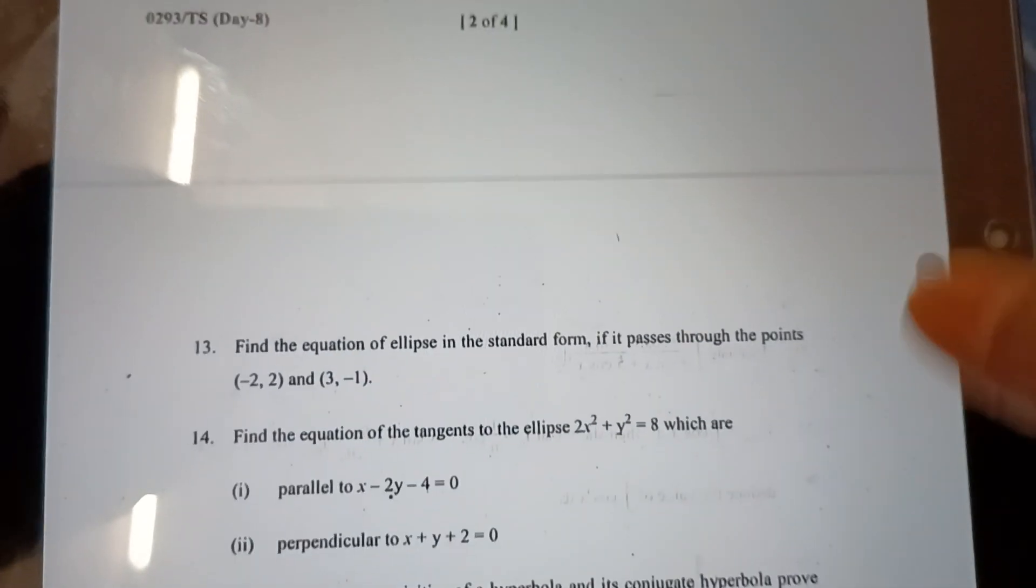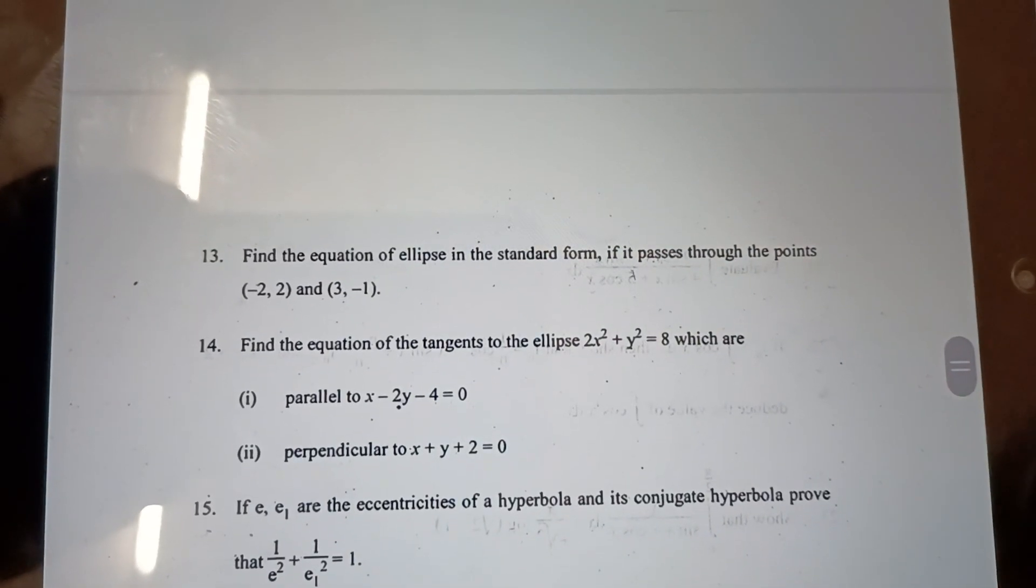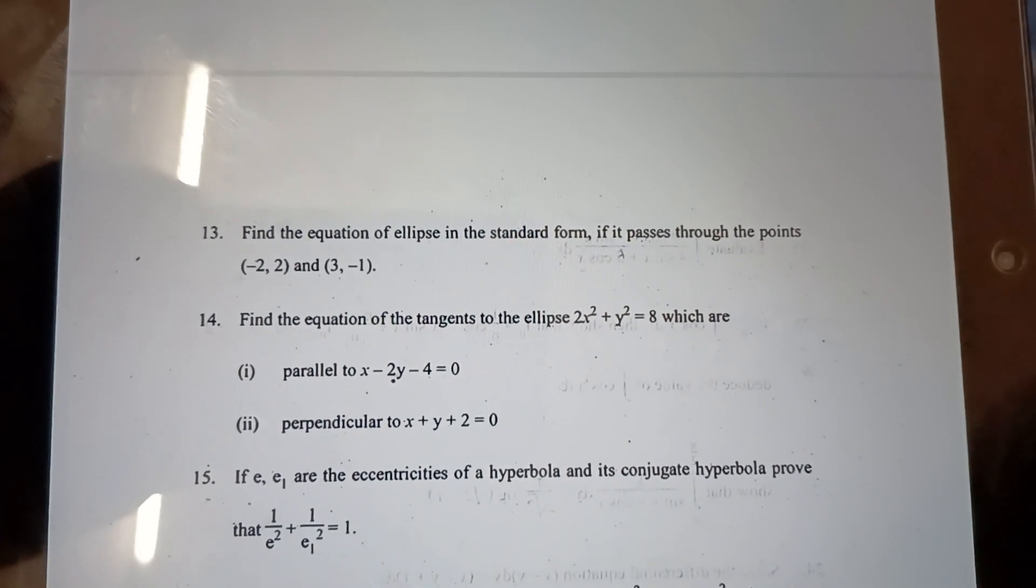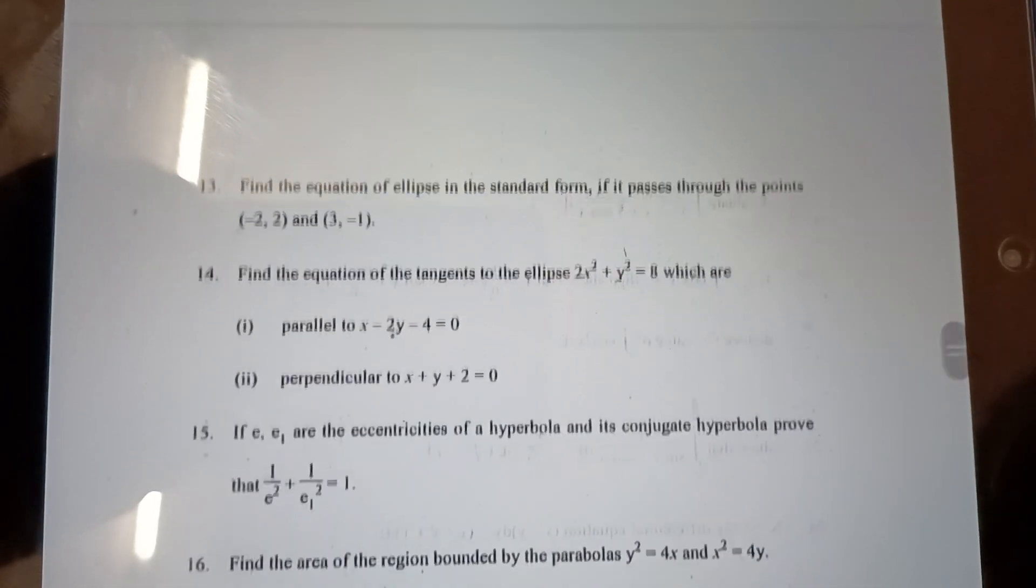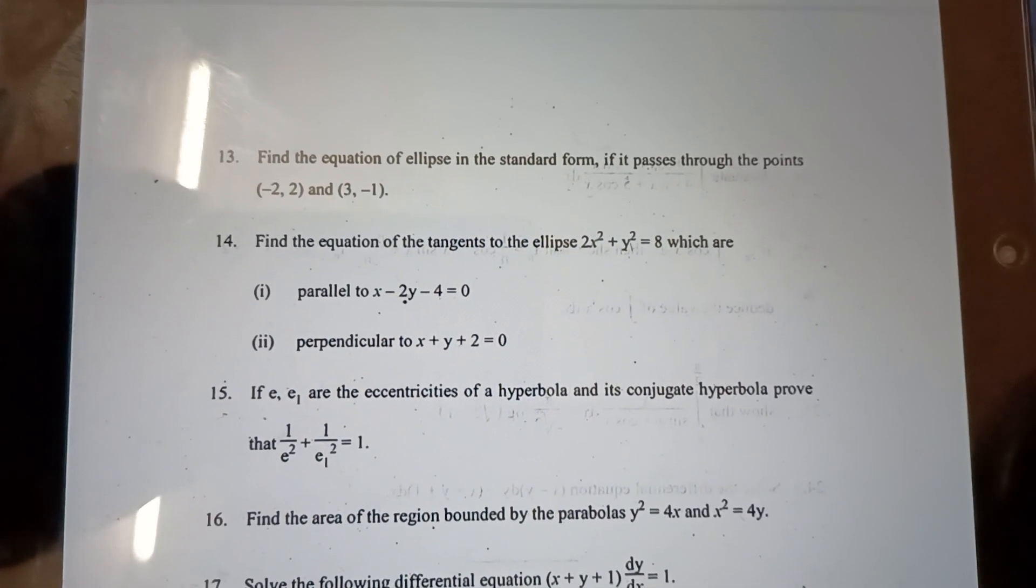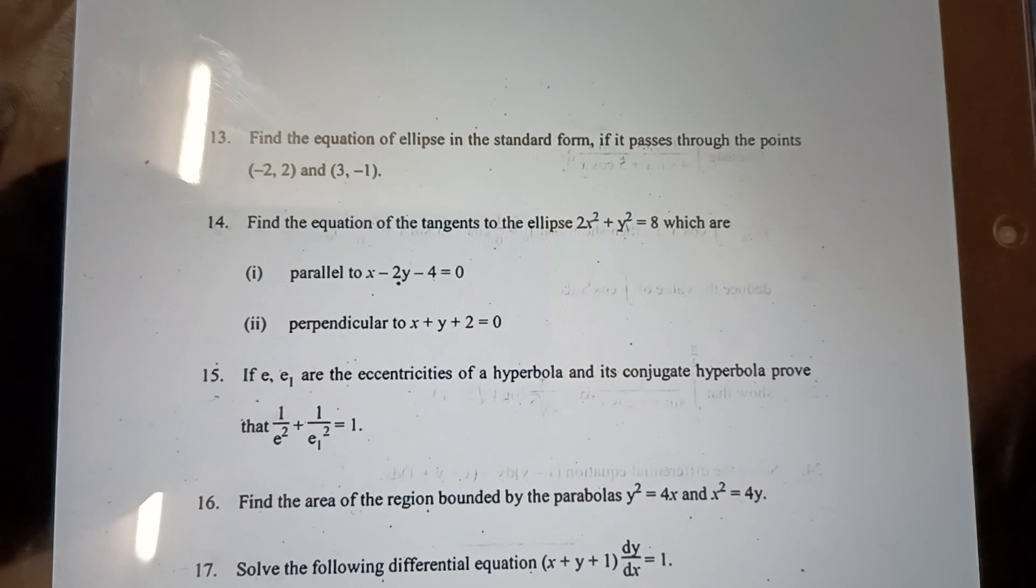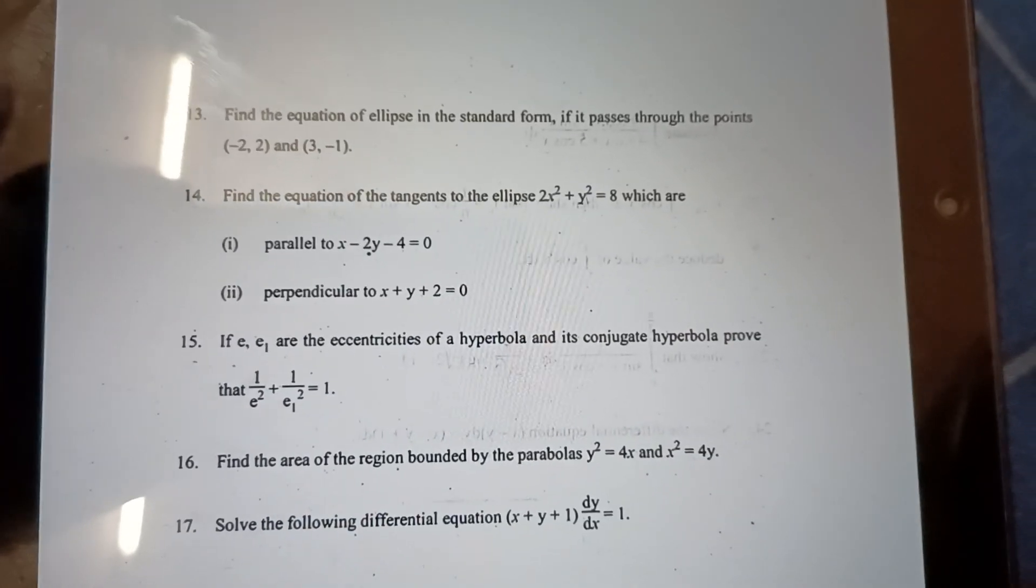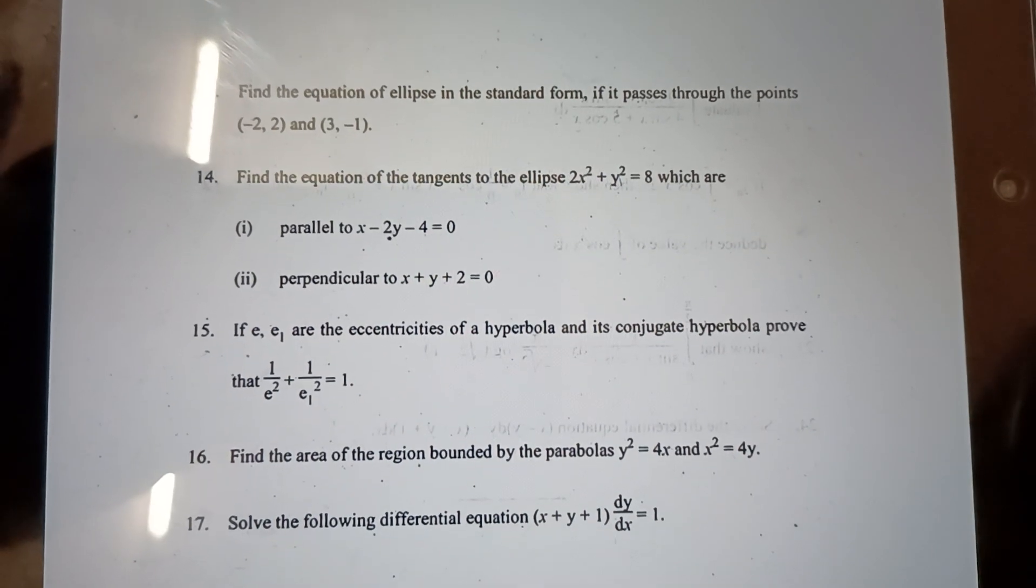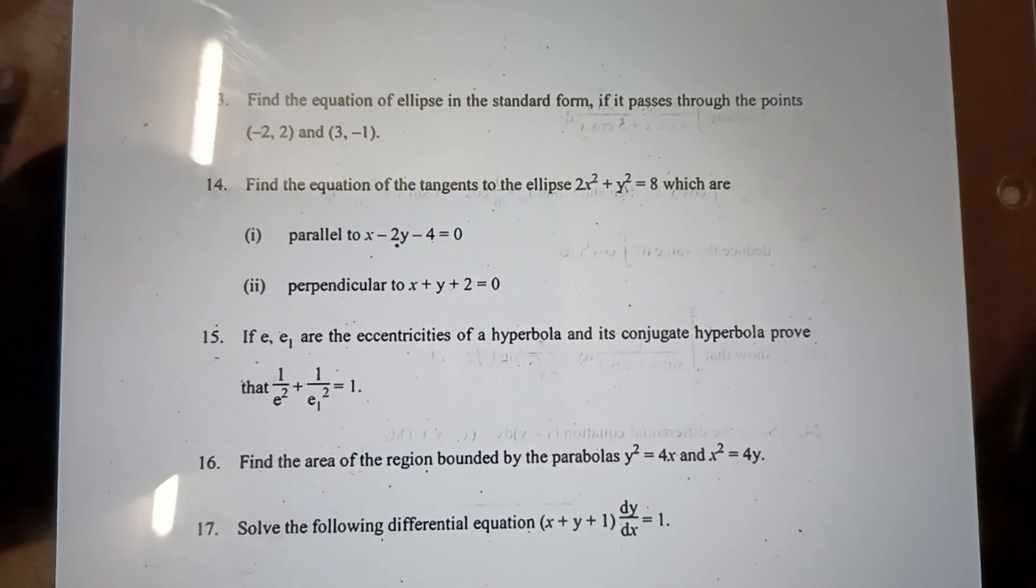Thirteenth one: Find the equation of the ellipse in standard form if it passes through the points (-2, 2) and (3, -1). Next, ellipse which are parallel and perpendicular. Next, hyperbola: e and e₁ are the eccentricities of a hyperbola and its conjugate hyperbola. Prove that 1/e² + 1/e₁² = 1. Find the area of the region bounded by the parabolas.